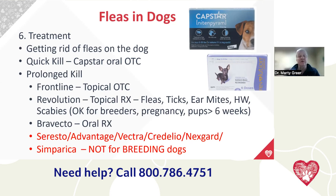Frontline is a topical over-the-counter product that does a great job on flea control. Revolution is a prescription topical called Selamectin, similar to ivermectin. It is labeled to get rid of fleas, ticks, ear mites, prevent heartworm disease, and treat scabies. Revolution is safe for dogs in a breeding program, pregnant dogs, and puppies over six weeks of age. Bravecto is the oral tablet — there are four oral flea and tick medications on the market: Credelio, NexGard, Simparica, and Bravecto.